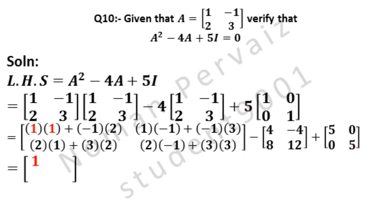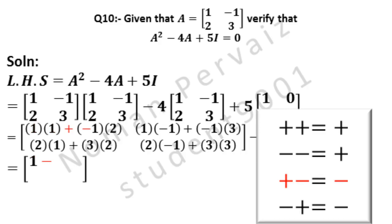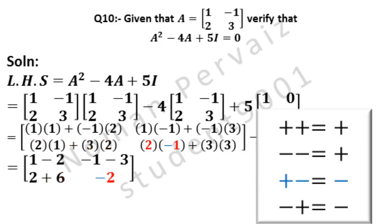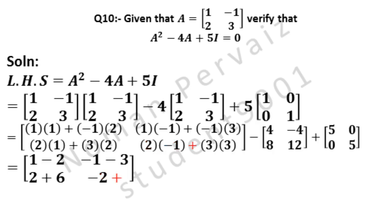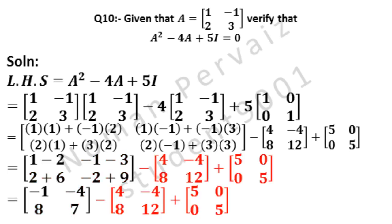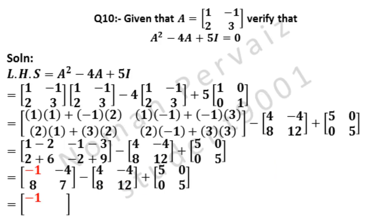1 one is 1. Plus minus is minus. 1 two is 2. Again plus minus is minus. 1 one is 1. Again plus minus is minus. 3 ones are 3. 2 ones are 2. 2 ones are 2. Plus is written as it is. 3 twos are 6. Plus minus is minus. 2 ones are 2. Plus is written as it is. 3 threes are 9. These two matrices come without any change. 1 minus 2 is minus 1. Minus 1 minus 3 is minus 4. 2 plus 6 is 8. Minus 2 plus 9 is 7.